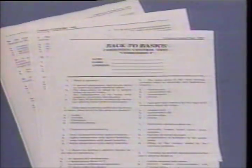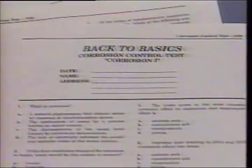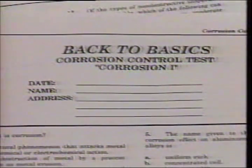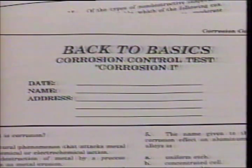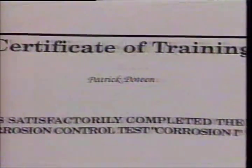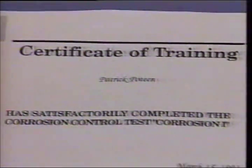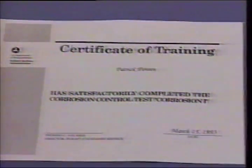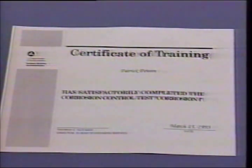A challenging open book test on this program is available from your local FAA Flight Standards District Office. The 25-question test is on the material covered in this program. With a score of 70% or higher, you will receive a certificate of training from the FAA. If you don't pass the first time, try again — we want to issue you the certificate.